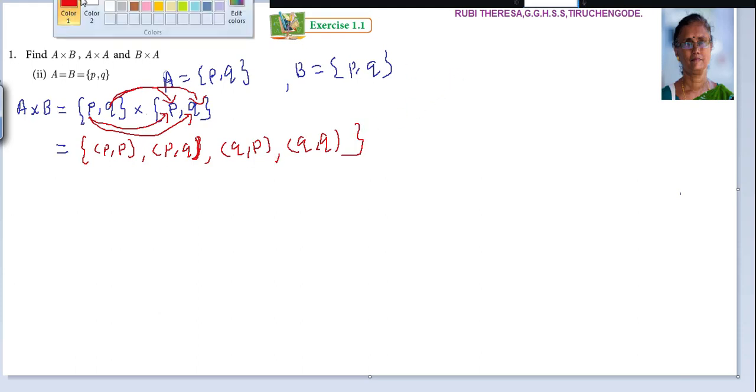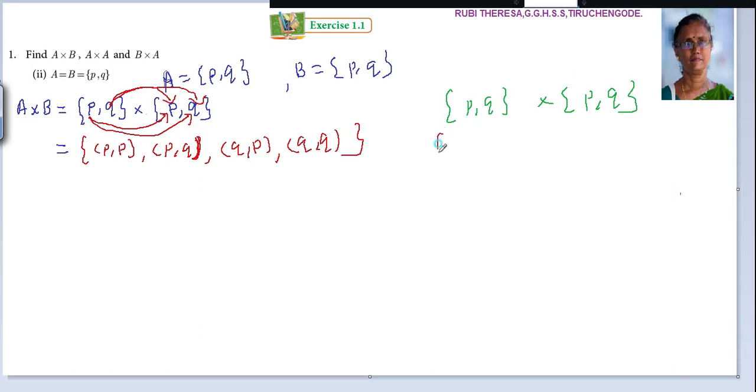Alternatively, some students ask about another way. For {P, Q} cross {P, Q}, you can pair: P with P, then Q with P, then P with Q, then Q with Q. Both methods give the same result—only the order is changed, but the elements are exactly the same.